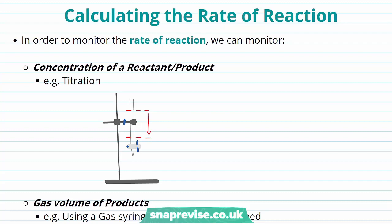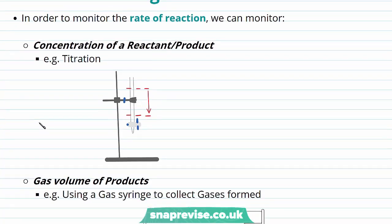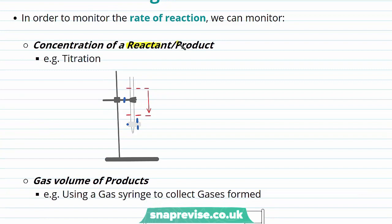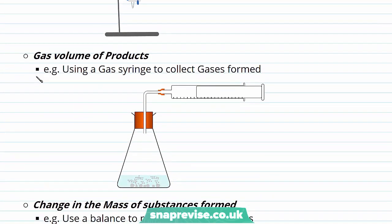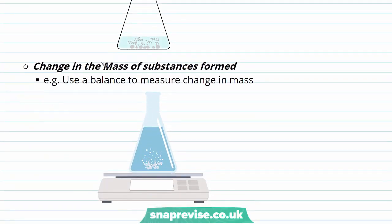In order to calculate the rate of reaction we can monitor a number of things. First of all, we can monitor the concentration of a reactant or a product — we could do this through the use of a titration. We could also monitor the gas volume of our product; we could use a gas syringe to collect the gases formed in a reaction that occurs within a sealed beaker.